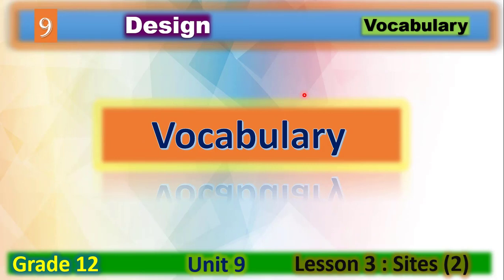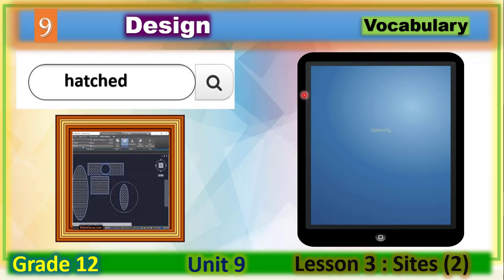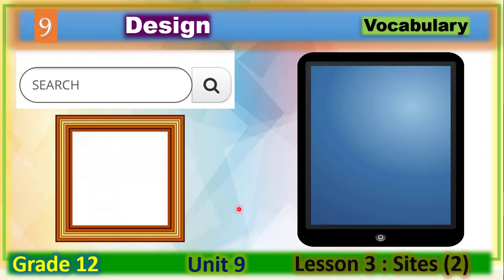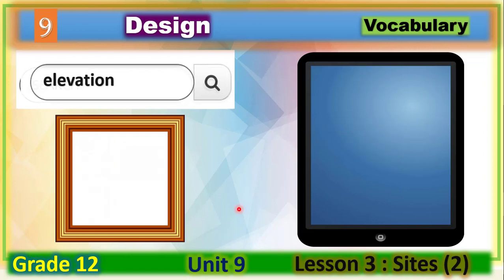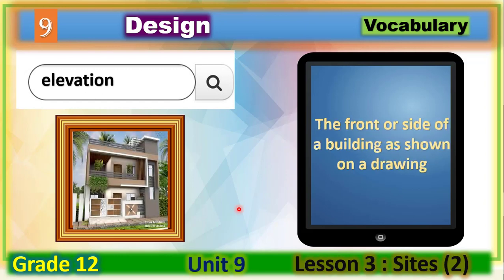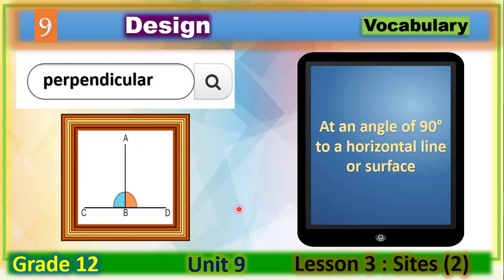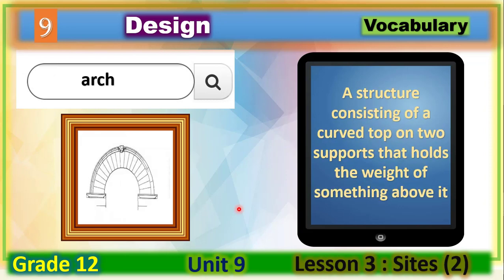Now let's learn some new vocabulary to help you understand today's lesson. The first word is 'hatchet,' meaning opening. The second word is 'tapered,' meaning becoming gradually narrower at one end. 'Elevation' means the front or side of a building as shown on a drawing. 'Perpendicular' means at an angle of 90 degrees to a horizontal line or surface. 'Arch' is a structure consisting of a curved top on two supports that holds the weight of something above it.